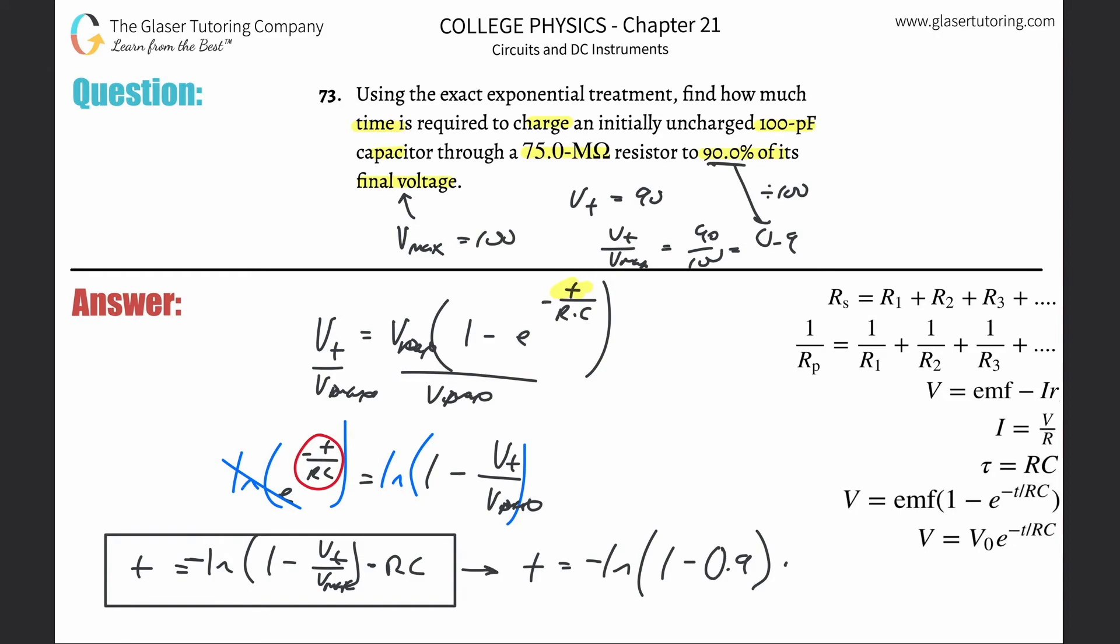This is going to be 0.9, and then multiply that now by RC. So the resistance there was mega ohms, but we need that in ohms, so that's 75 multiplied by 10 to the sixth. Then multiply that by the capacitance—they gave it to you in pico, but we need that in farads—so take that 100, multiply it by 10 to the minus 12.